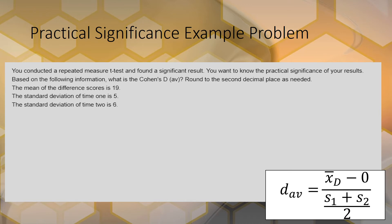The mean of the difference scores is 19. The standard deviation of time 1 is 5, and the standard deviation of time 2 is 6.